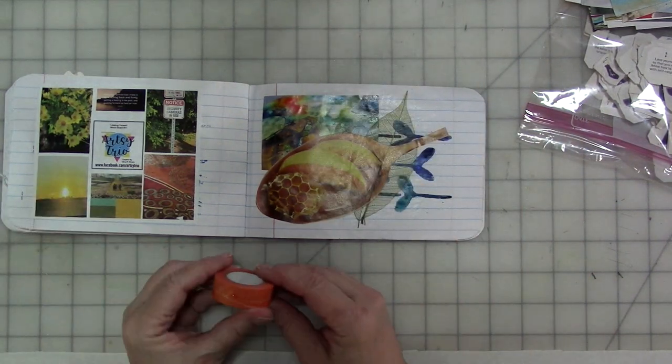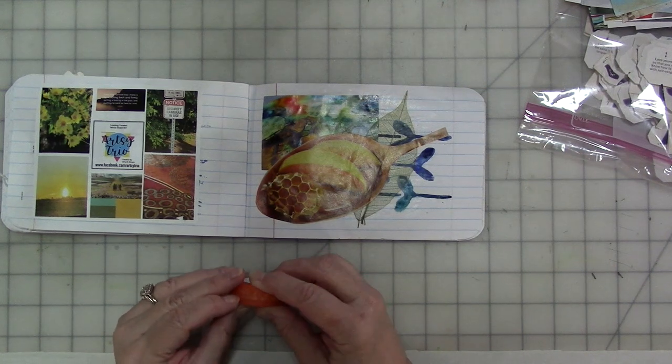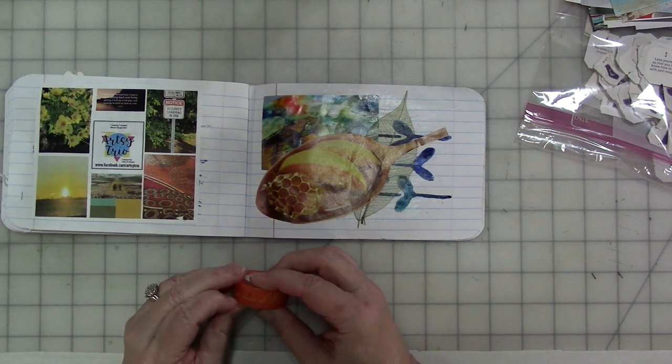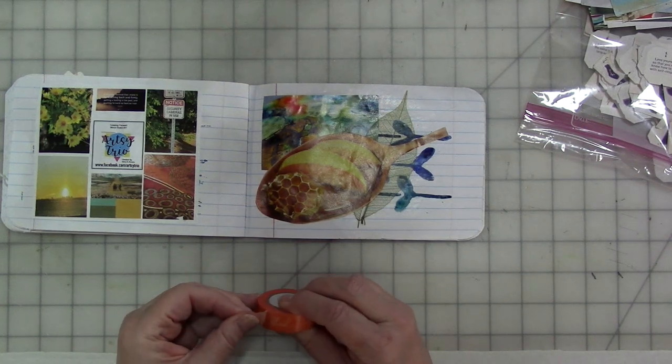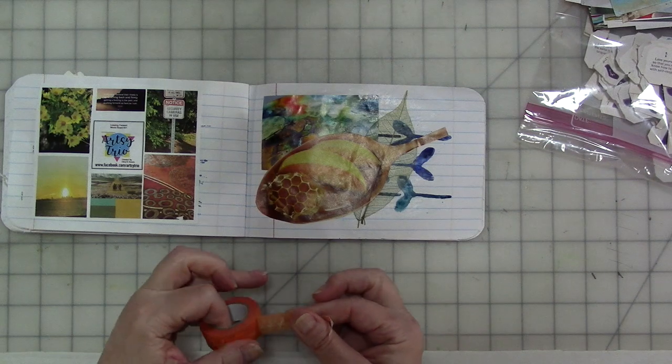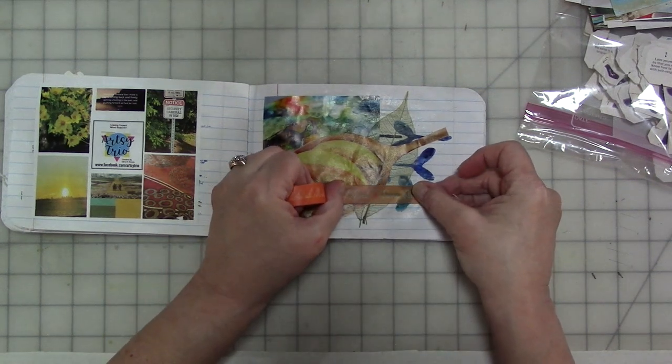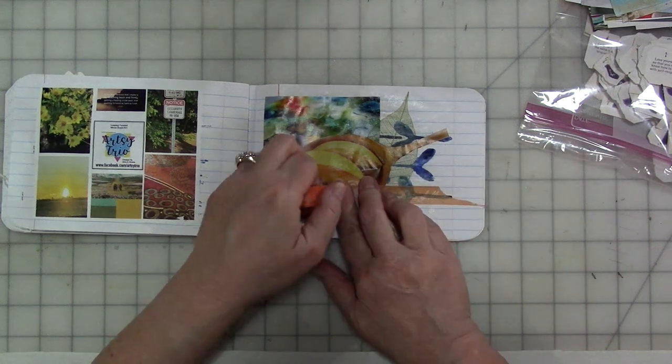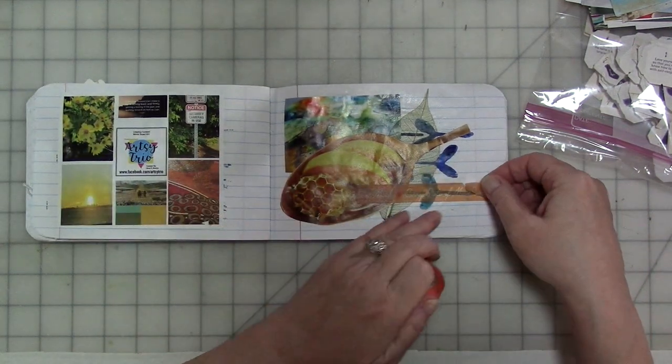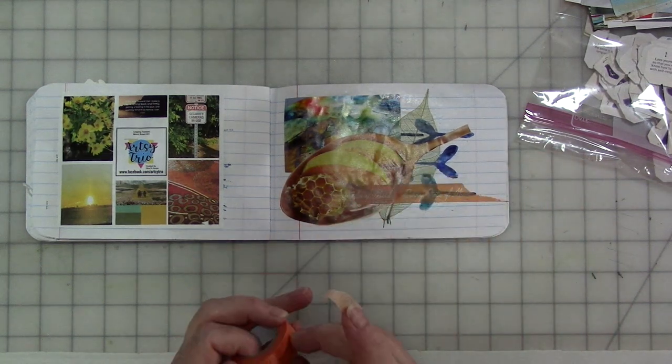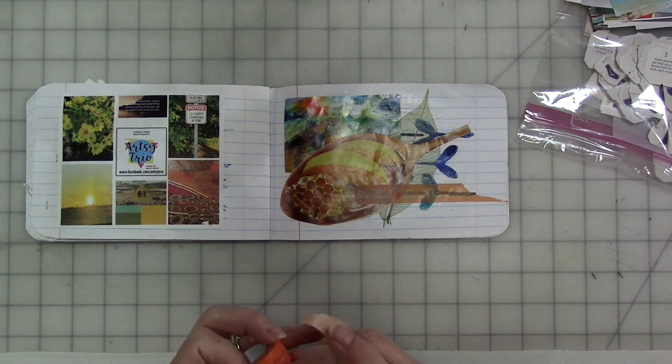Washi tape. I really want to do this one which says something on it - sunny state of mind, I think it says. I don't know where I got this from, I've had it a long time. Oops, and that's probably why I don't use it too much because it's one of those tapes that doesn't want to come off cleanly.